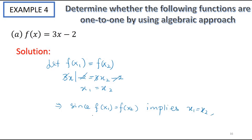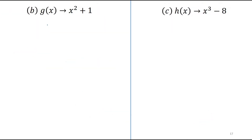As a conclusion, since f(x₁) = f(x₂) implies x₁ = x₂, therefore we can say that f(x) is a one-to-one function. Now let's see if g(x) = x² + 1 is a one-to-one function or not.